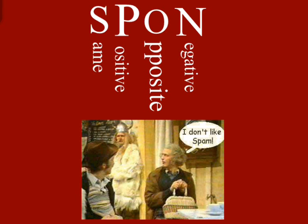Remember, you need to use SPON when you're evaluating these exponents. SPON stands for: same sign, positive; opposite, negative — when you're multiplying and dividing integers.